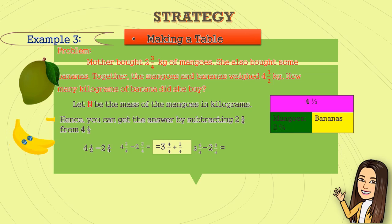Now, let us subtract the whole numbers and the fractions. Three minus two equals one. And six minus three is three. And copy the same denominator. The answer is one and three-fourths. This is the mass of bananas in kilograms.